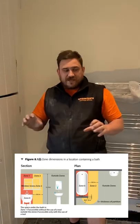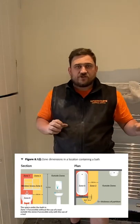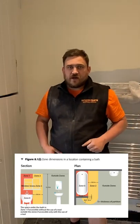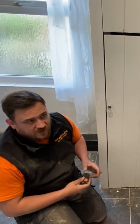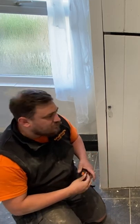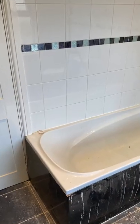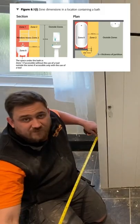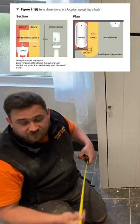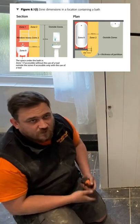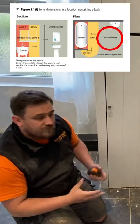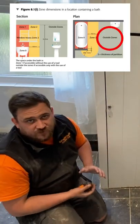We're going to look at what an airing cupboard means in relation to the zones of the bathroom. First, we're going to measure from the edge of the bathtub to see where the airing cupboard falls in relation to the zones. It's well over a meter away from the edge of zone one, so we're actually outside of the zones altogether.